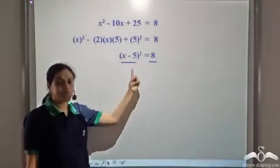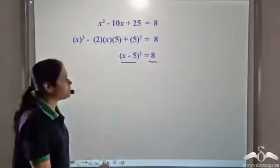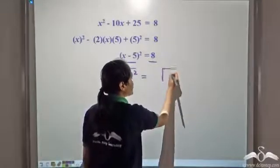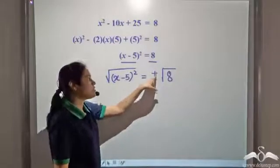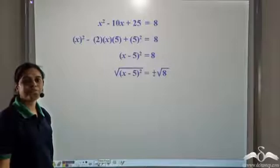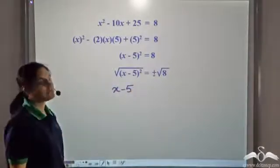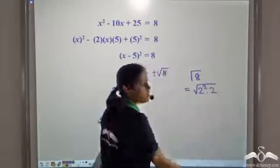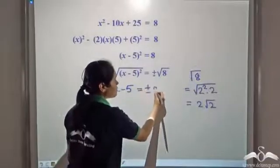The left hand side is a perfect square and the right hand side is a constant, so let us take the square root of both sides. We know we only need to consider the ± sign on one side, so we place it on the right hand side. Now, √8 = √(2² × 2) = 2√2. So the right hand side becomes ±2√2.